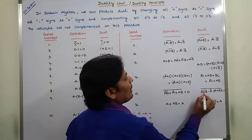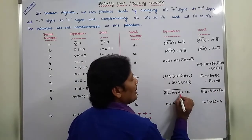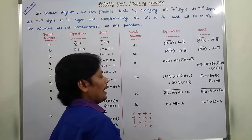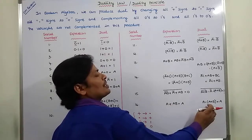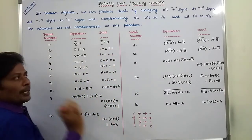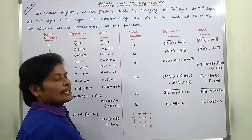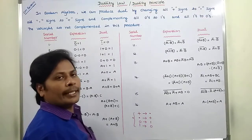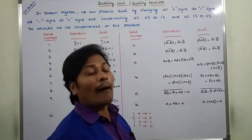Here (AB)' — dual: A plus B whole bar; plus sign changes to AND sign. Ā is the same; plus sign changes to AND sign; AB changes to (A plus B)' which remains the same. Next, A plus AB equals A; its dual: A AND (A plus B) equals A. We can change a given expression to its dual by changing plus sign to AND sign, AND sign to plus sign, zero to one, one to zero, but the variables are not changed. This is the description of the duality principle or duality law.